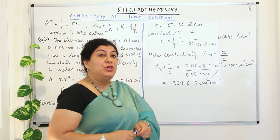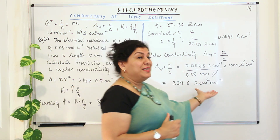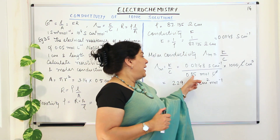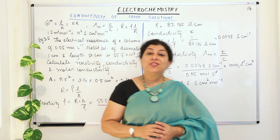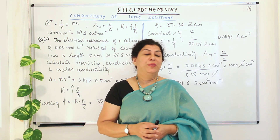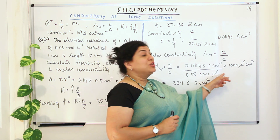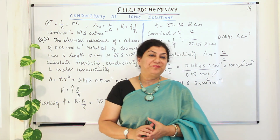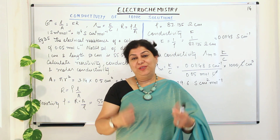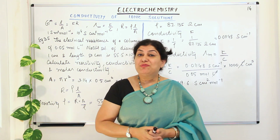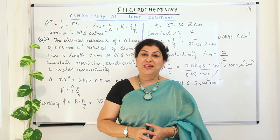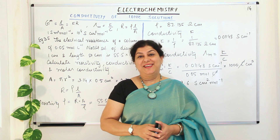Try solving the same problem using meters: concentration will need to be in mol per meter cube, so multiply by 1000 in the denominator to convert from liters to meter cube. With this, I will finish this video. If you found it helpful, give it a thumbs up, subscribe to my channel, recommend it to your friends, and keep returning for more videos on chemistry. Thank you for watching, bye-bye for now.